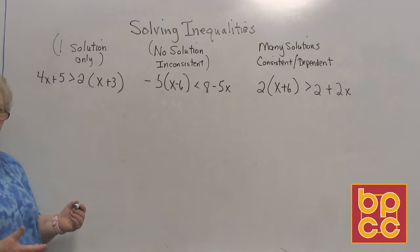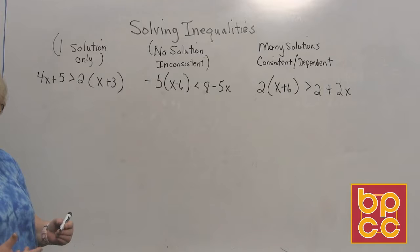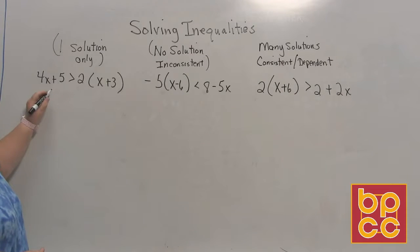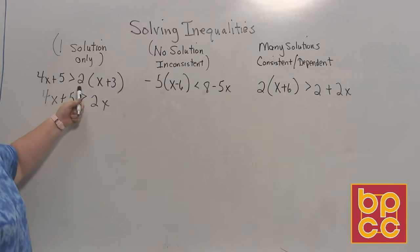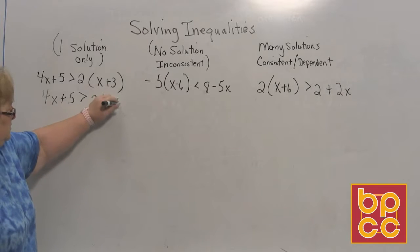Okay, let's solve this like we normally solve inequalities. We're going to take care of any distribution, we're going to combine any like terms, and then we'll start making our move. So it looks like this side is ready to go, so I'm going to say 4x plus 5 is greater than 2 times x is 2x, 2 times 3 plus 6.